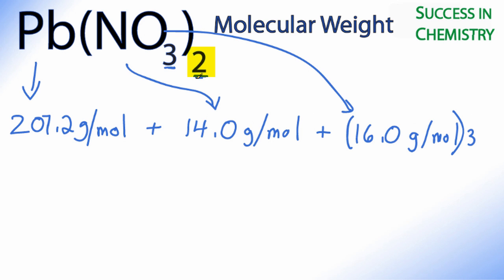Now this 2 right here, that applies to everything in the parentheses, the nitrogen and those 3 oxygens. So I'm going to put brackets around the nitrogen and all the way over here, and then I'm going to multiply by 2 outside of that. So now I've accounted for all of these subscripts here.